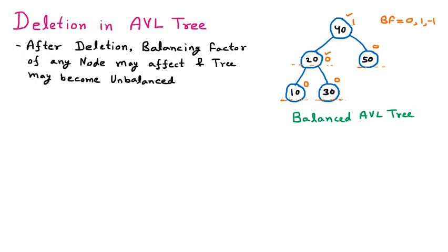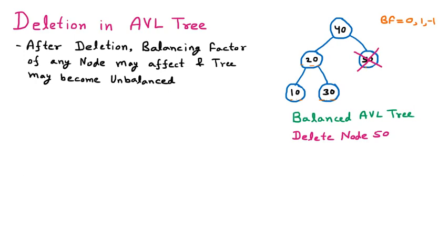Now if we perform a deletion operation on this balanced tree — specifically deleting node 50 — we remove that node from the tree. If this node is not there, the balancing factor will change, so first we remove this node from the tree.